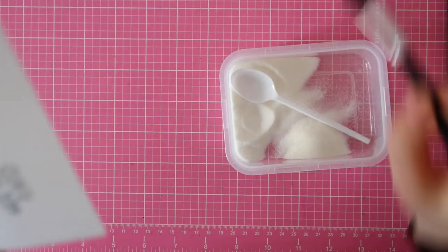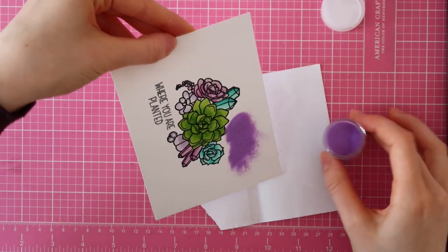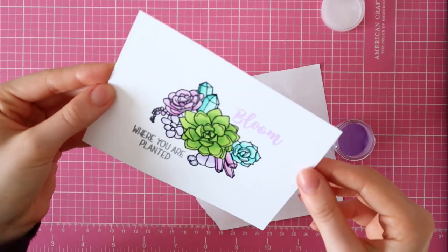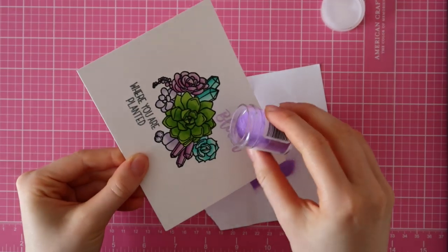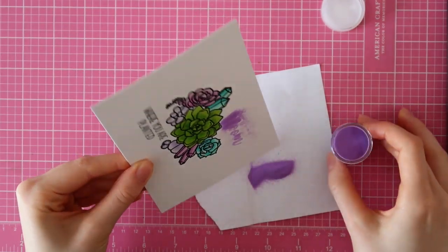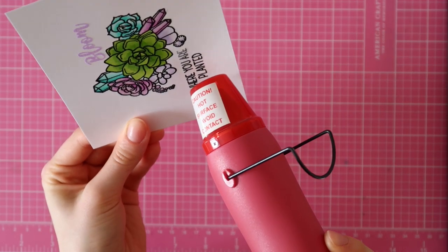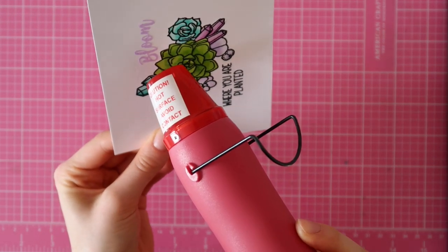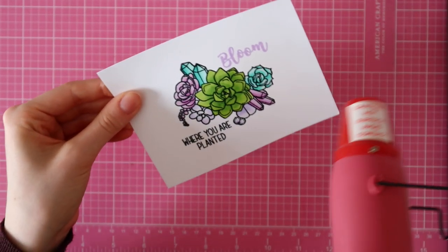So I'm stamping these two sentiments with the WOW Slow Drying pad and then I am sprinkling on the clear gloss embossing powder on the black sentiment. I'm just using a brush to wipe away any excess powder. And then for the bloom sentiment, I am using Primary Parma Violet embossing powder from WOW. This is a beautiful lavender color and it matches the other colors from the succulent arrangement perfectly.